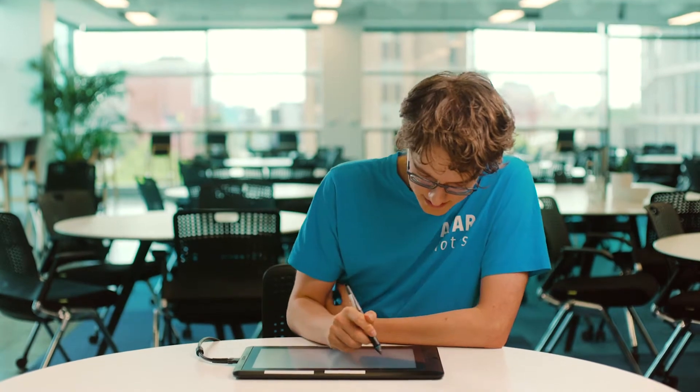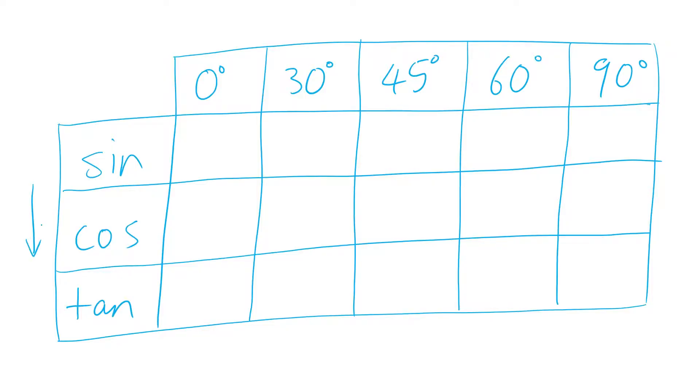So quickly draw up a table like this, so you've got sin, cos, tan along one side, got all your angles along the other.